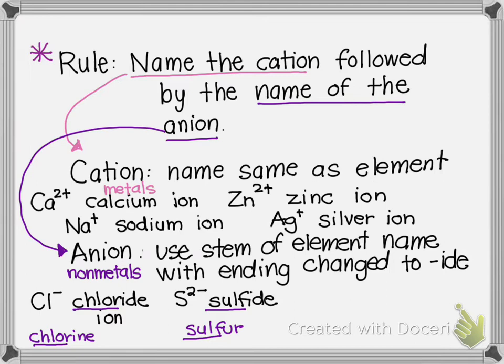What would be another one? Phosphorus. So phosphorus would be phosphide. So again, to name the anion, you take the stem of the element name and change it to I-D-E.